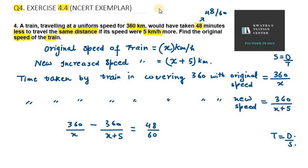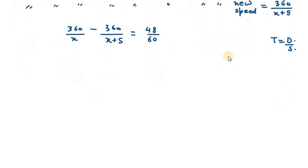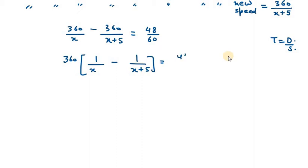We need to solve this equation for the original speed. Taking 360 common from the left side, we get 360 times (1 over x minus 1 over x plus 5) equals 48 over 60. Reducing 48 over 60 gives us 4 over 5.